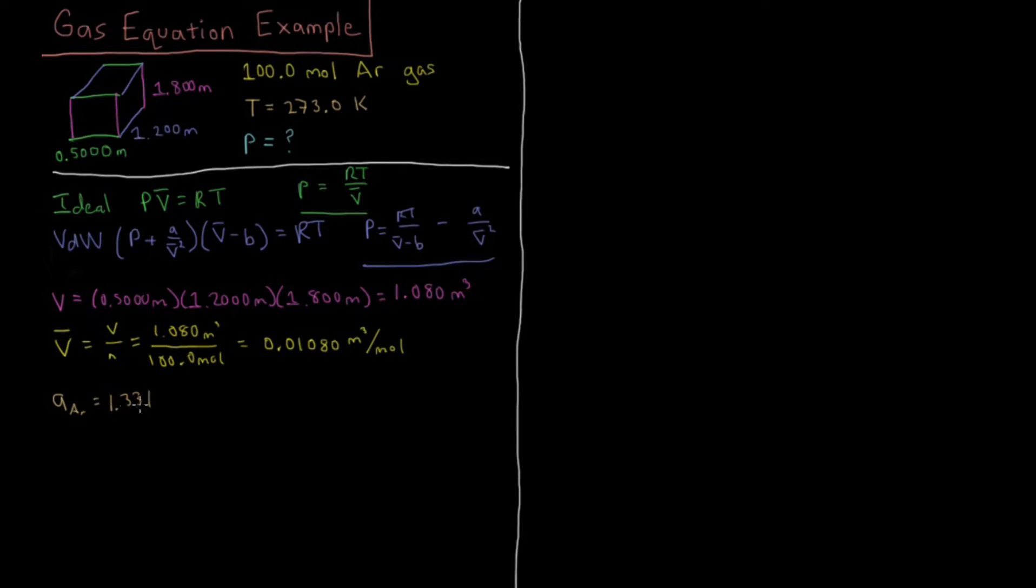For argon, A is 1.331, and we need to pay attention to the units. That is decimeters cubed per mole, that whole quantity squared, atmospheres. What units are we going to be working in?